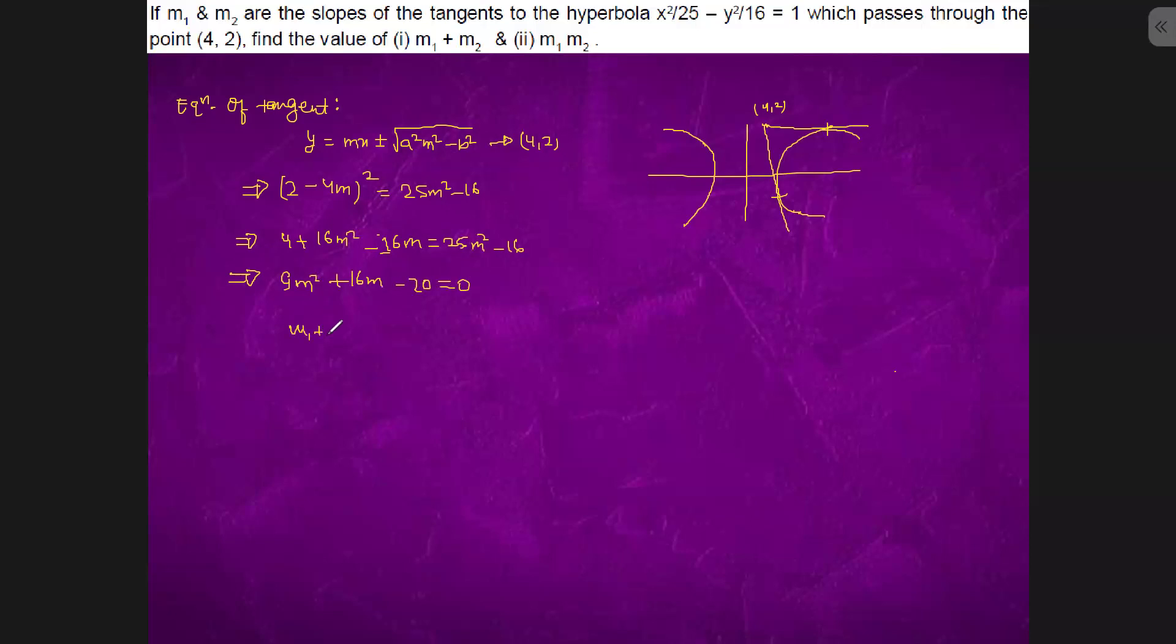So m₁ plus m₂ is what? Minus sixteen by nine. And m₁ m₂ is what? Minus twenty by nine. So this is the question asked here.